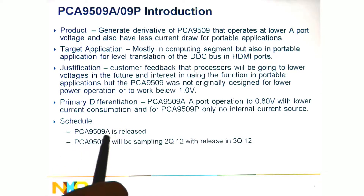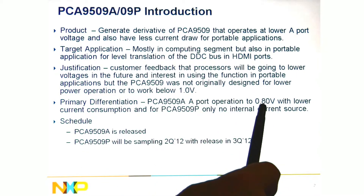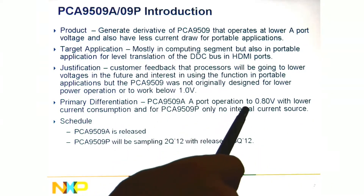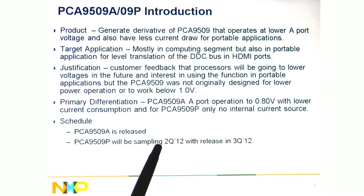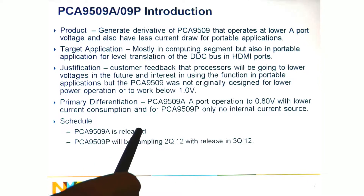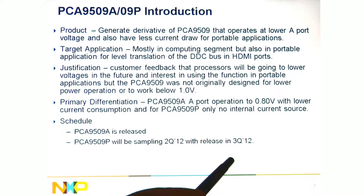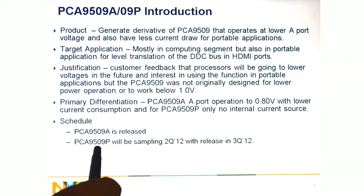The primary difference between the 9509 and the 9509A and P is that it operates down to 0.8 volts with lower current consumption. The 9509P doesn't have the internal current source, allowing you to size your own pull-up resistors. The 9509A is released and you can find information about it on the internet. The 9509P is sampling in Q2 and releasing in Q3. Contact your NXP account manager or i2c.support@nxp.com for additional information on the PCA9509P.